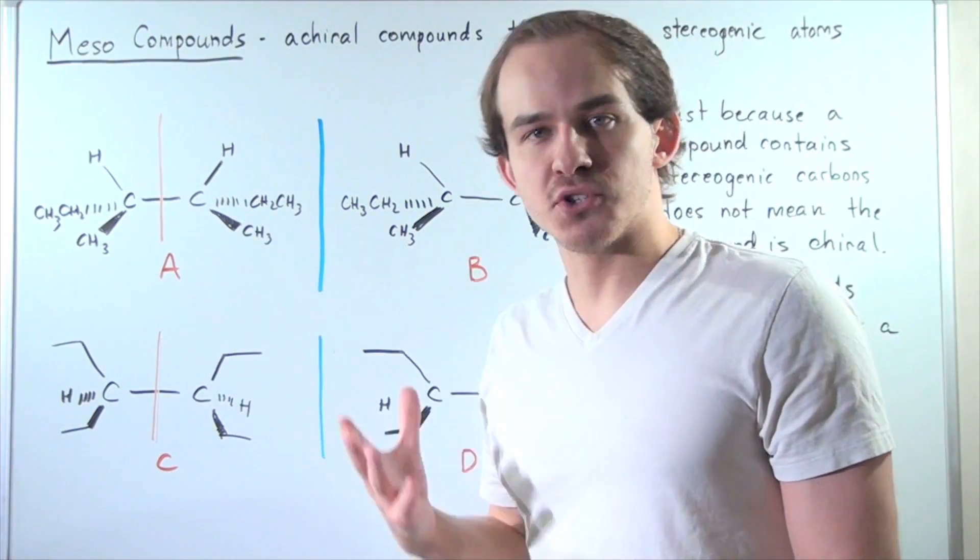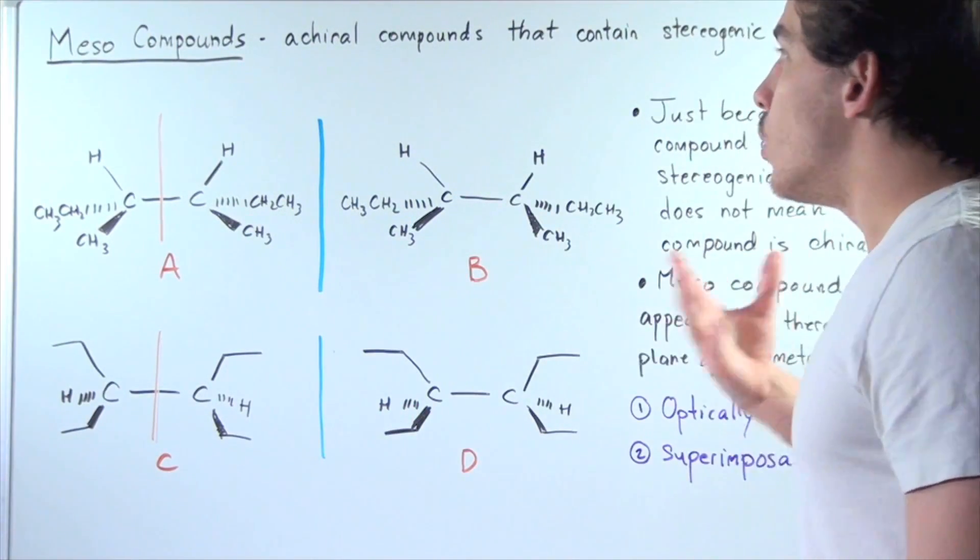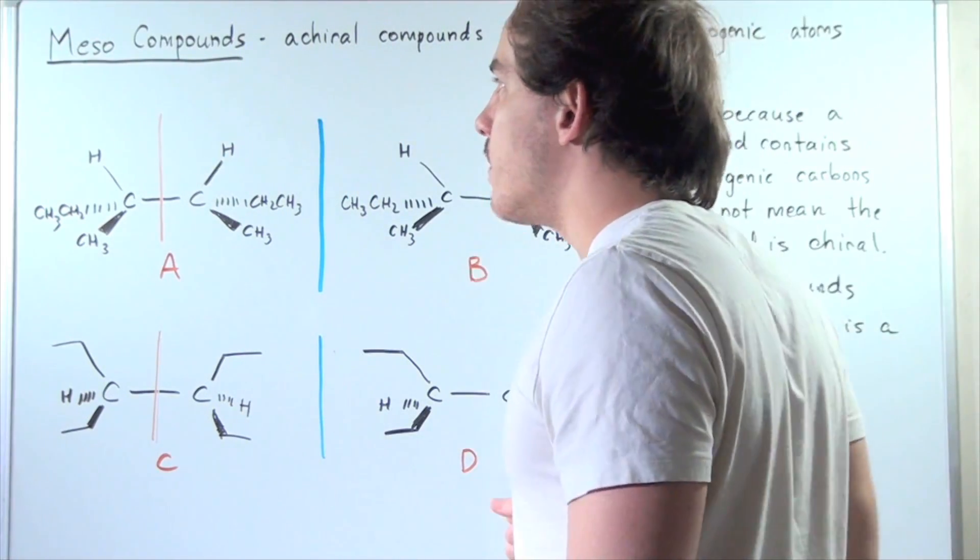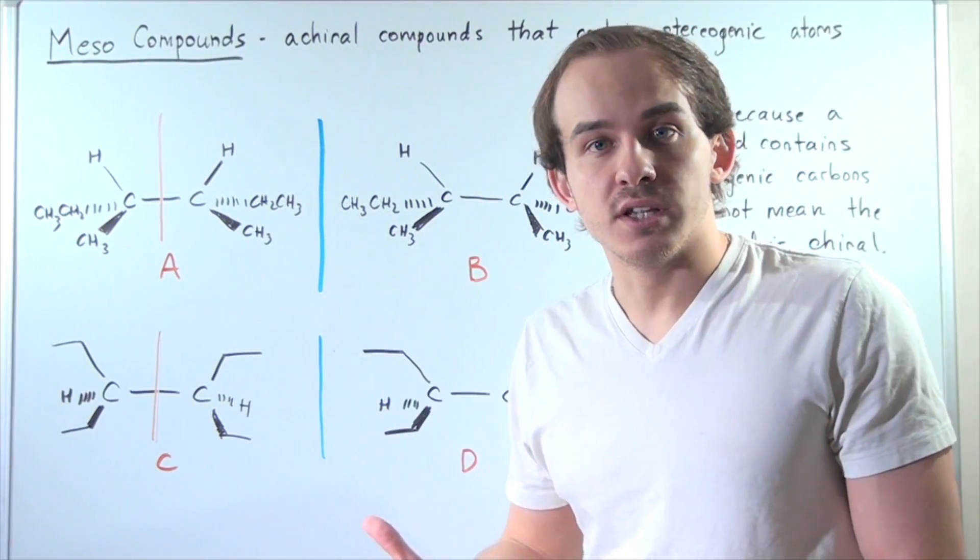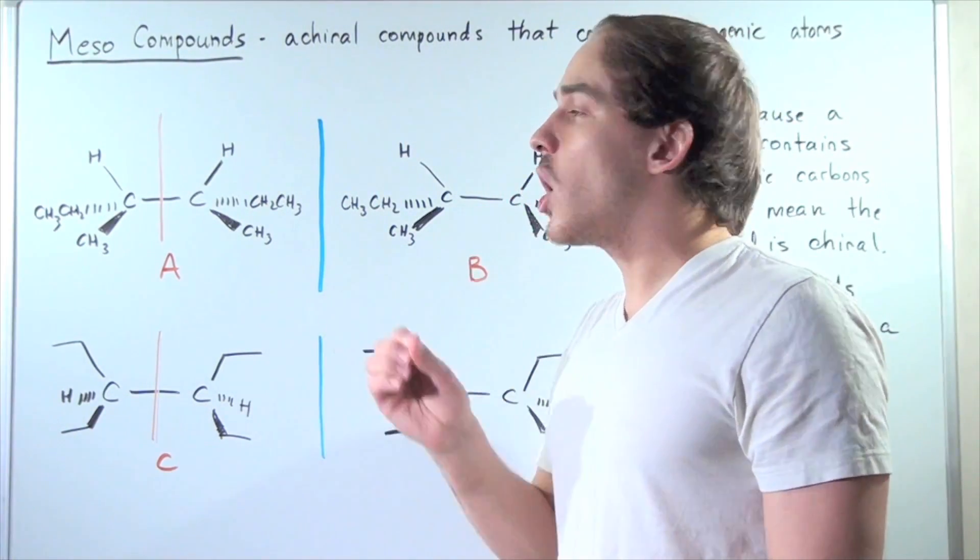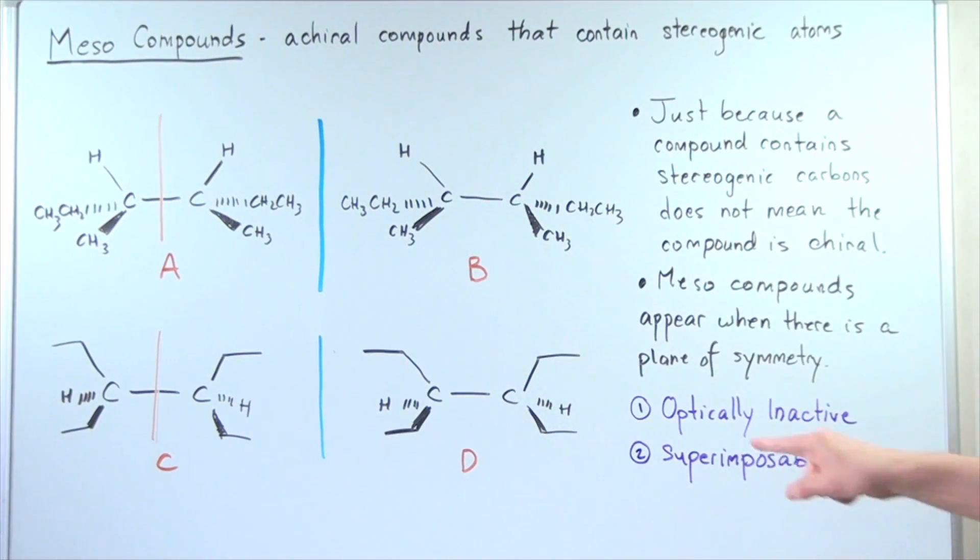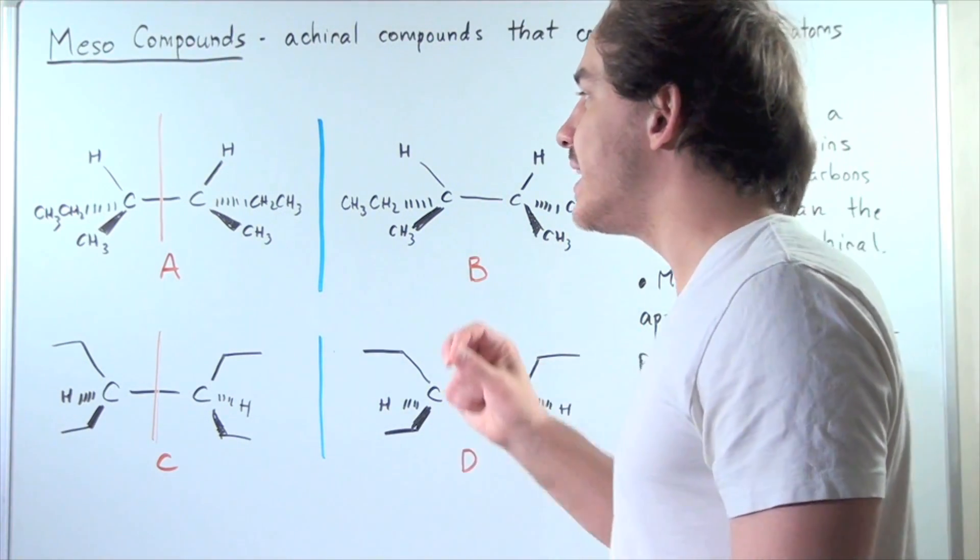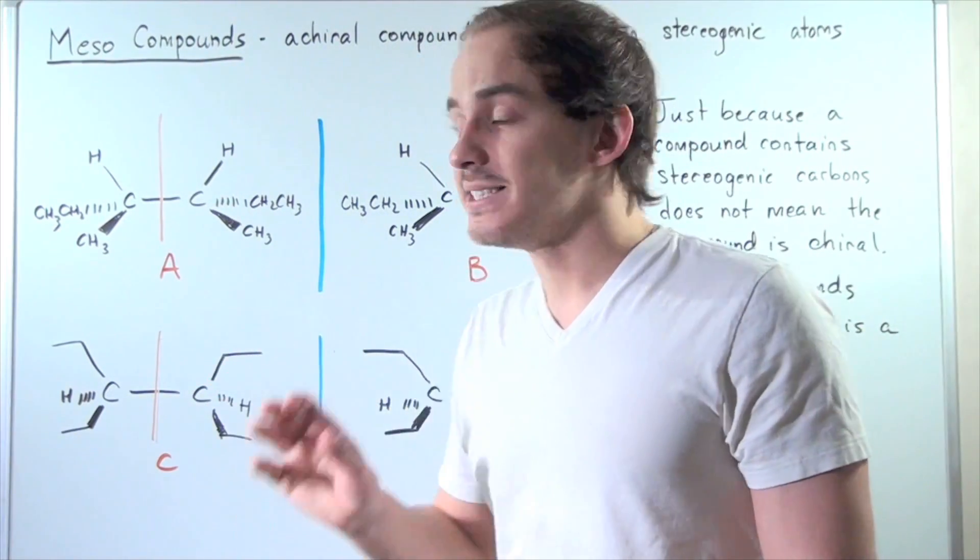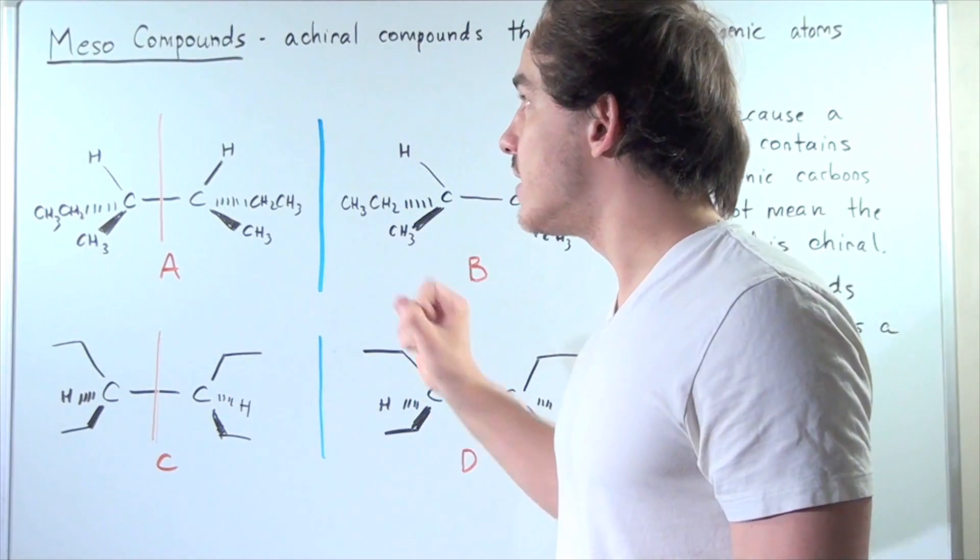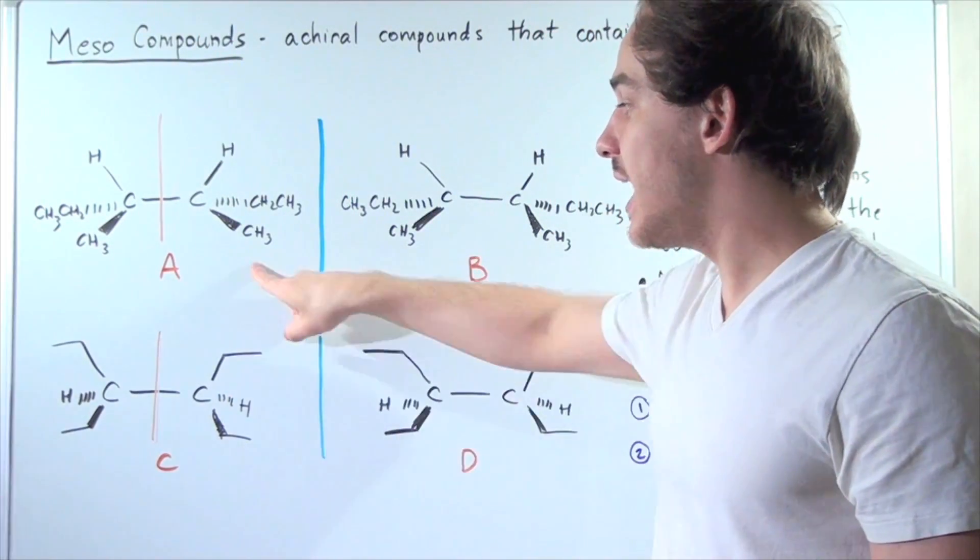What's the big deal about mesocompounds? Why are they important? Well, they are important when we're talking about optical activity. Mesocompounds are optically inactive. That means when we shine plane polarized light onto our mesocompounds A and C, these compounds will not rotate the plane polarized light.